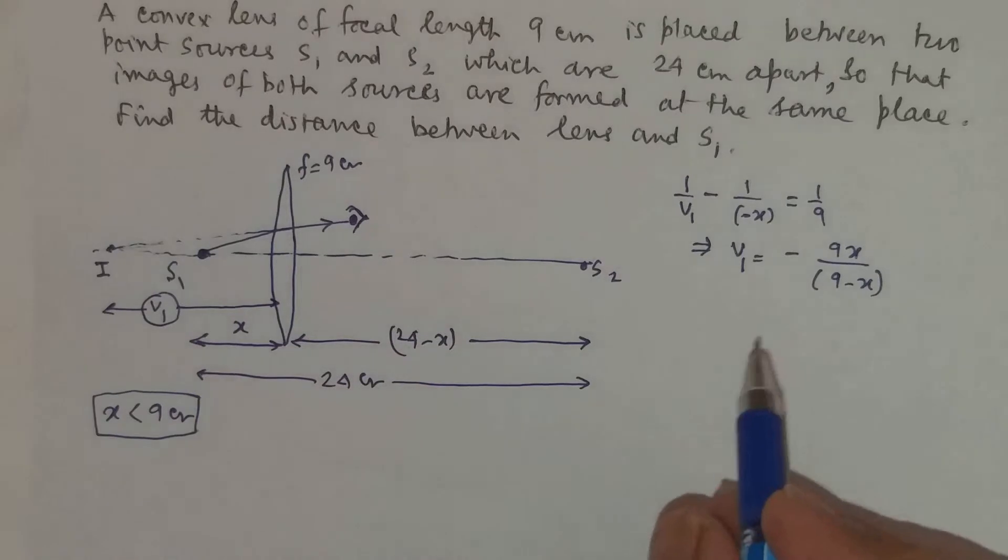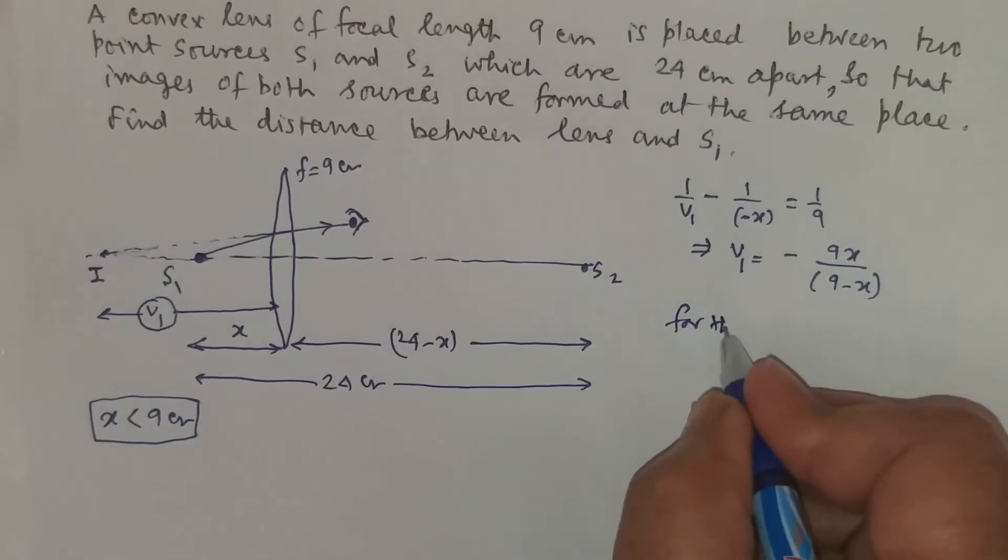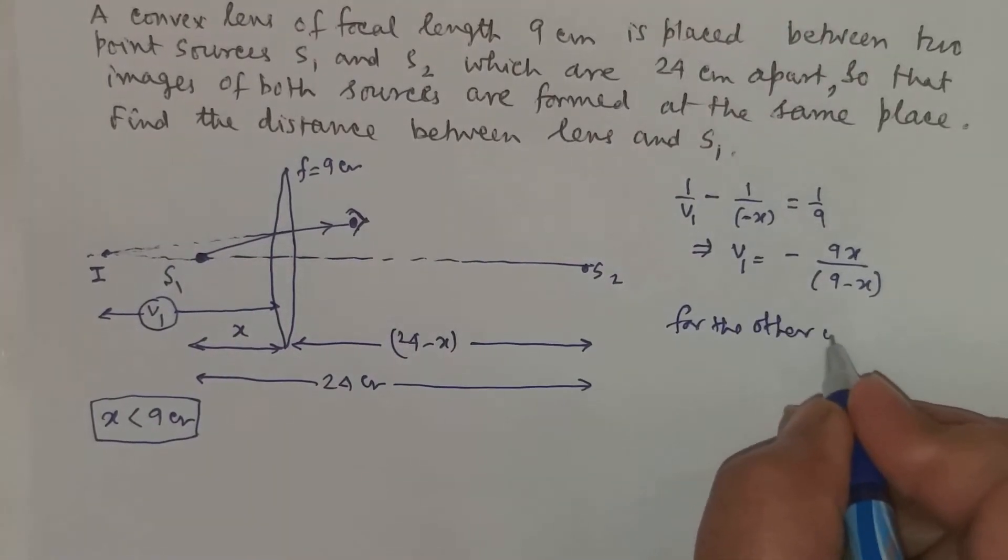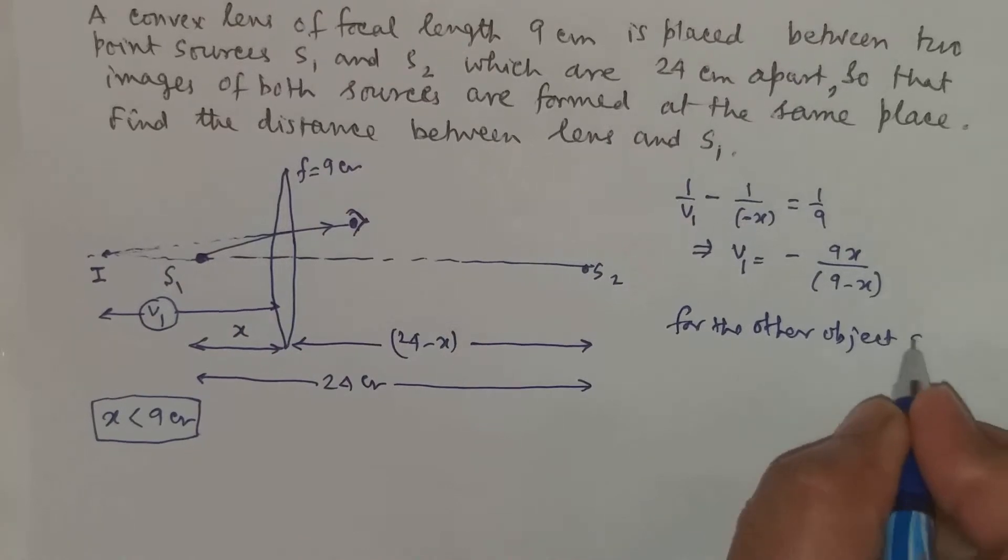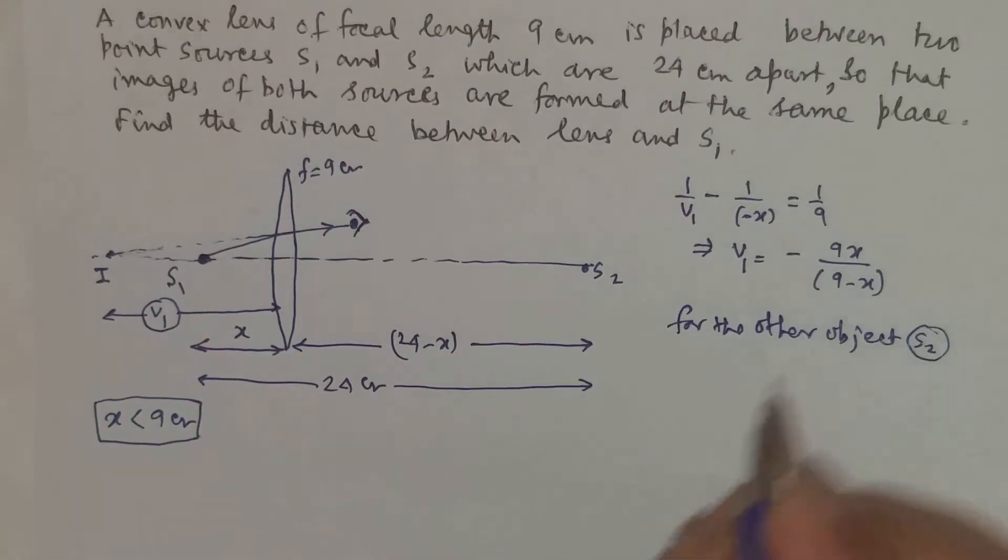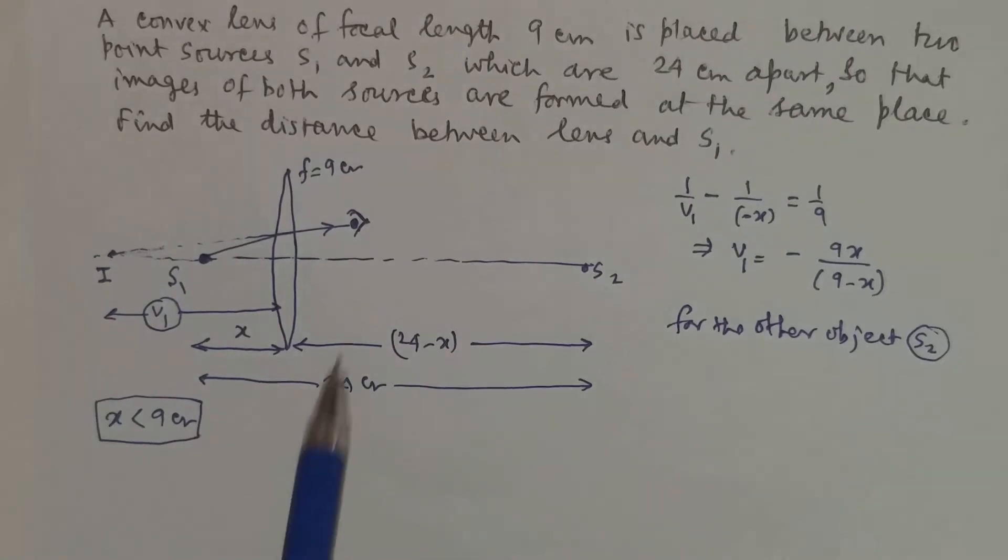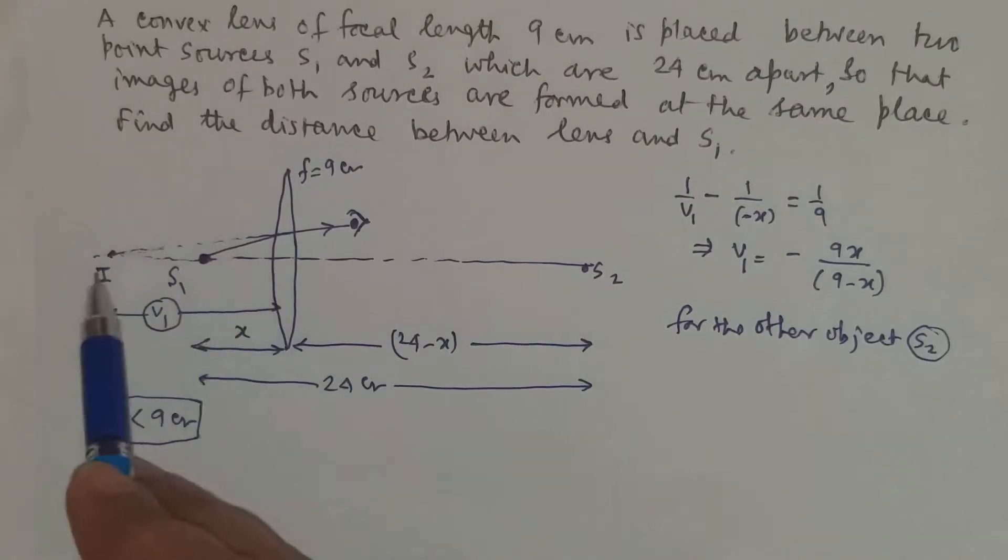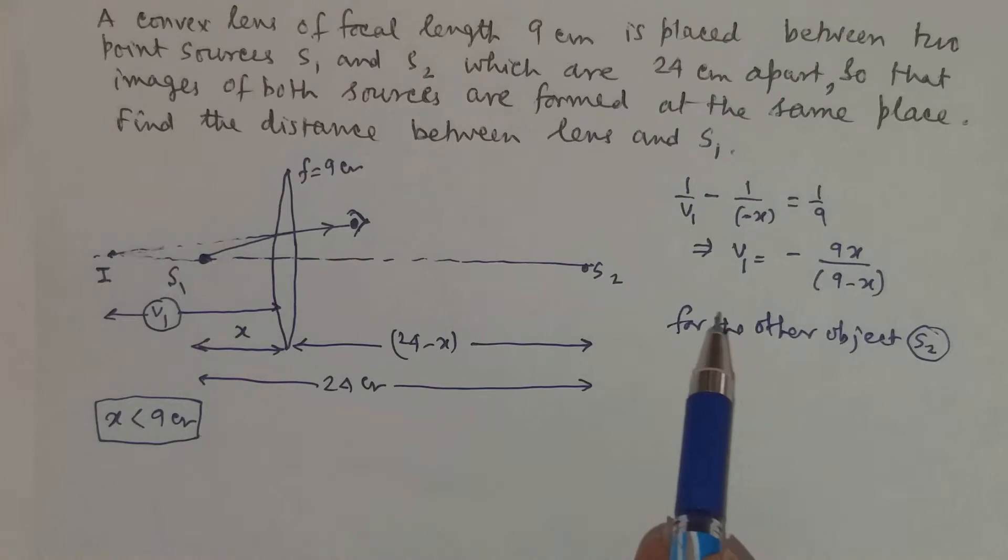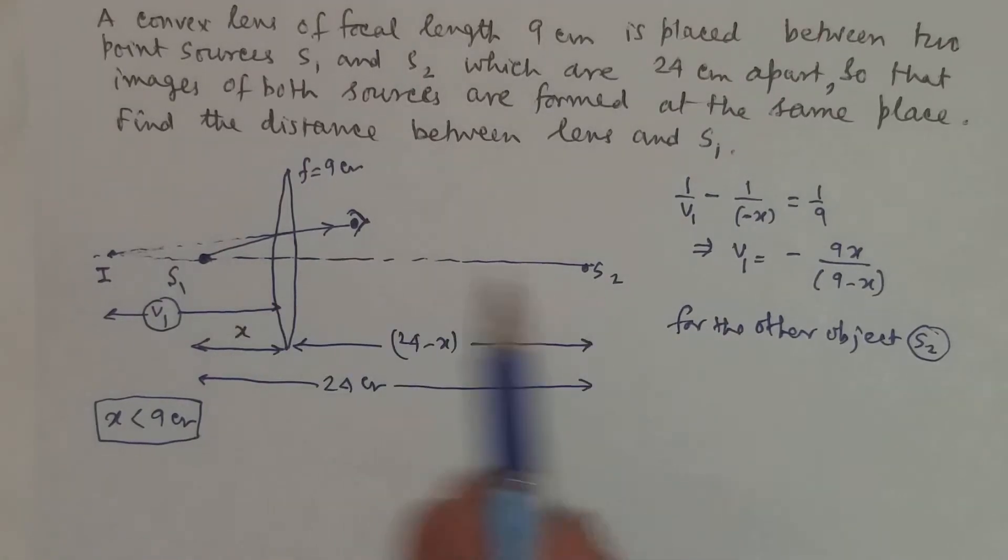Now for the other object which is S2, the image distance will be this distance, that is the object distance is this and the image distance will be same as that I have calculated. You can take that this is your left side, this is your right side by the proper sign convention.